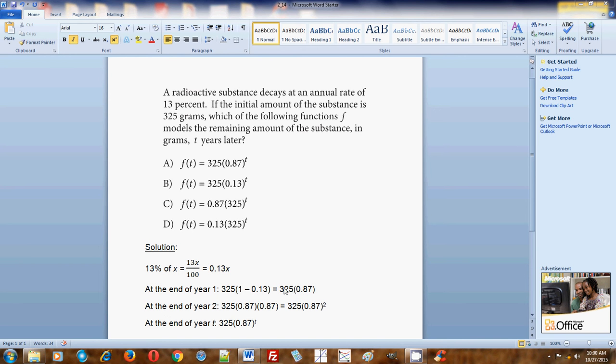So at the end of year two, we're going to take the end of the first year's amount, which was 325 times 0.87, and we find 87% of that amount. As a result, 0.87 will be multiplied by 0.87 here besides the 325 in the product. So it's easy to see that 0.87 will be squared, so we will have 325 times 0.87 squared.